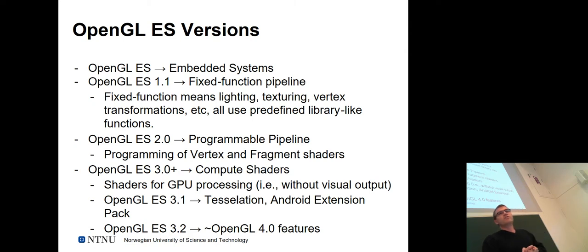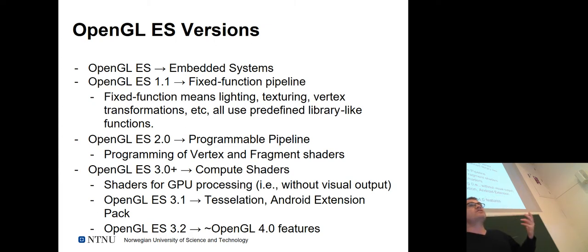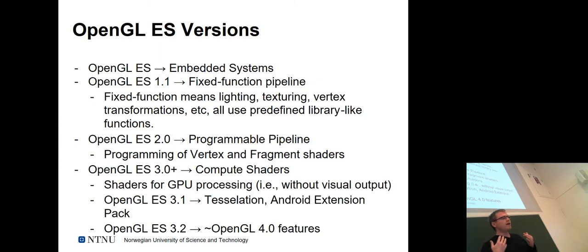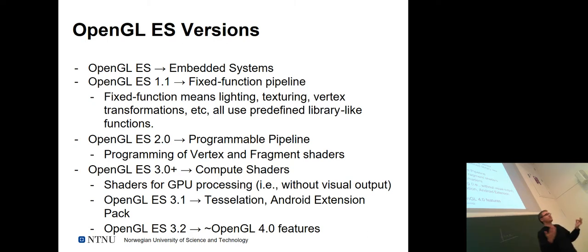Compute shaders are reserved for GPU programming — that's the obvious course because it's literally about doing computational tasks that don't necessarily have visual output. You can do general-purpose computation on your graphics card — like cryptocurrency mining, for example. It's no longer reliant on any graphics output. This is introduced with OpenGL ES 3 onwards.